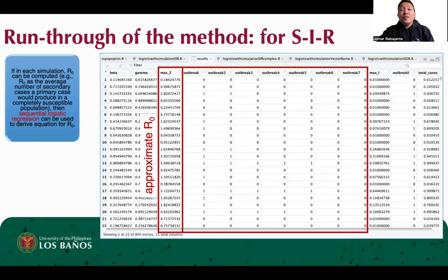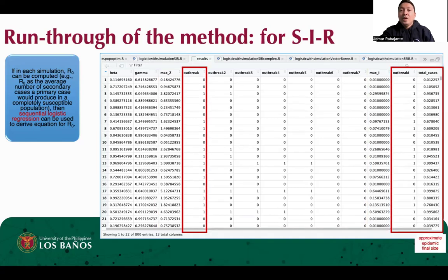We can also check the table of outputs. For the results, we need to set indicators if R-naught is below 1, between 1 and 2, between 2 and 3, and so on. We can also check if the results are consistent in the table, such as whether an outbreak occurs both when using R-naught as an indicator and when using increase in number of cases as an indicator. The approximate epidemic final size should also be consistent with the estimated numerical R-naught.